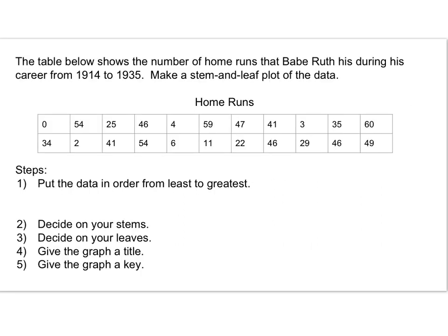Let's begin with the following table. This information shows the number of home runs that Babe Ruth hit during his career from 1914 to 1935, and we're going to make a stem-and-leaf plot from this data. There are five steps. First, put the data in order from smallest to largest. Then decide your stems, followed by your leaves. Give the graph a title, and then we need a key to be able to read the stem-and-leaf plot.